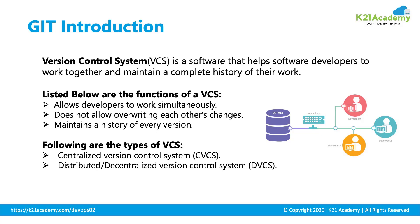Let's go into the Git introduction. Git is a version control system and it is being used across 90% of the world's IT companies. But before that, we will first see what is a version control system. Why do you think a version control system is actually needed? Its main use is to store the versions, or mainly to store the history of the code.